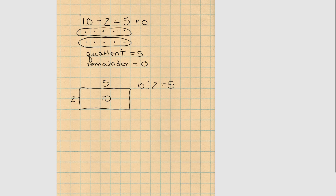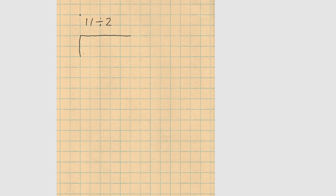Let's look at a different problem. Now we have 11 that we want to divide by 2. So 11 divided by 2 — let's draw another area model. Again we're dividing by 2, so let's count: 2, 4, 6, 8, 10. But I don't have enough to go to the next 2, which would be 12. So I need to stop here. In this rectangle I have 10 squares, and I show my 11th square by itself out here because I don't have enough to make another group. So 2 times 5 is 10 plus 1 would be 11. So for my equation, 11 divided by 2 is 5, remainder 1.